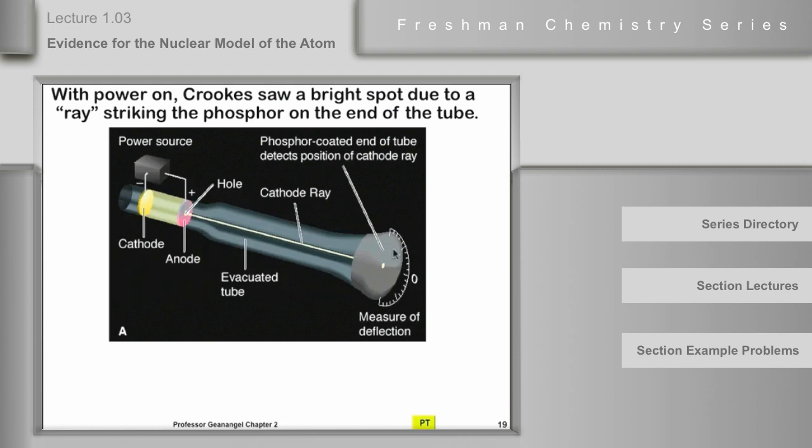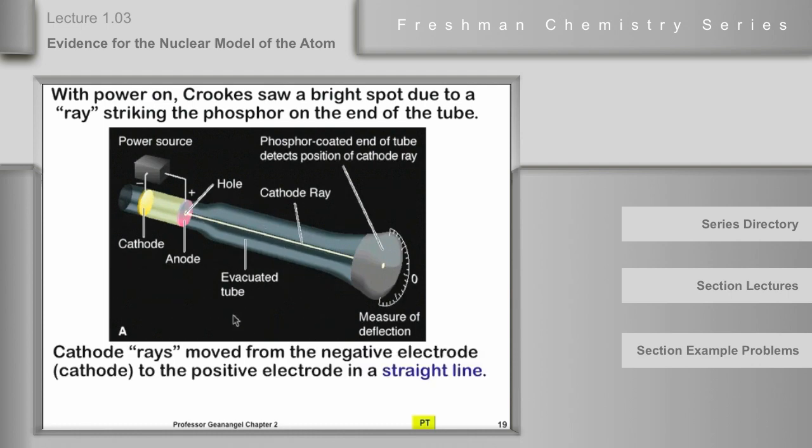What happened was interesting. When he turned the lights out and put some phosphor-containing material down on the end, if he made the hole in the anode circular, he got the image of a circle. If he made it square, he got a square. If he made it a triangle, he got a triangle. Something was moving from the cathode and going to the anode, with some going through the hole and traveling in straight lines down the tube, striking this phosphor on the end. This was puzzling. He called these things cathode rays because they came from the cathode, but he didn't really have a good explanation for what they were.